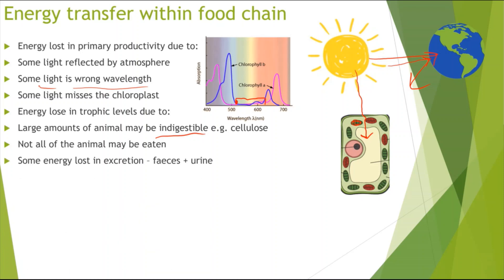Energy is also lost through excretion — feces and urine — because indigestible material passes out of the body without transferring its energy. Energy is also lost through respiration and heat: maintaining metabolism and maintaining constant internal temperature through homeostasis requires energy, so that energy is not passed on. This is why energy transfer within the food chain is very inefficient.